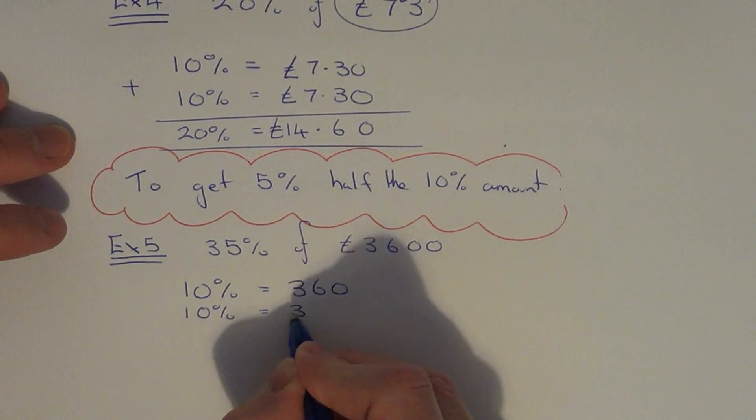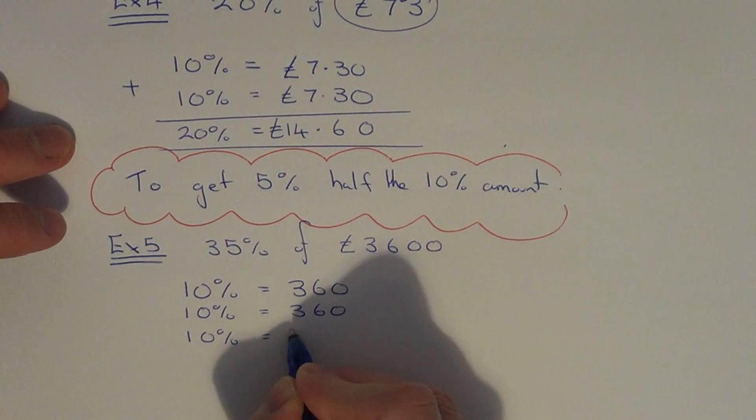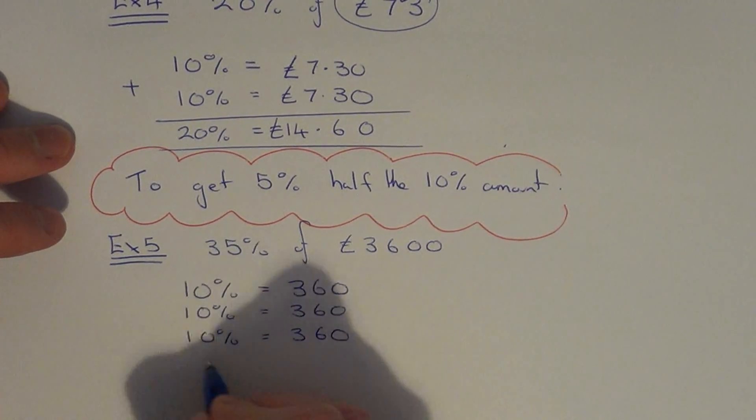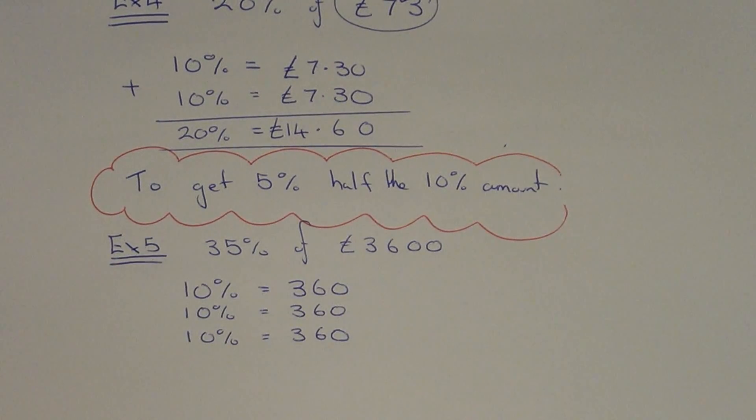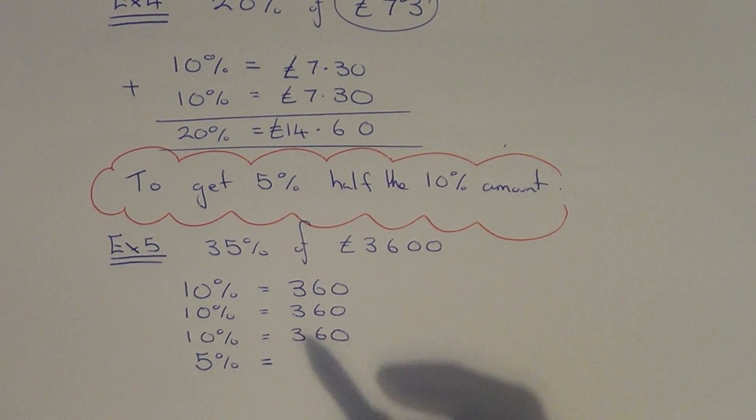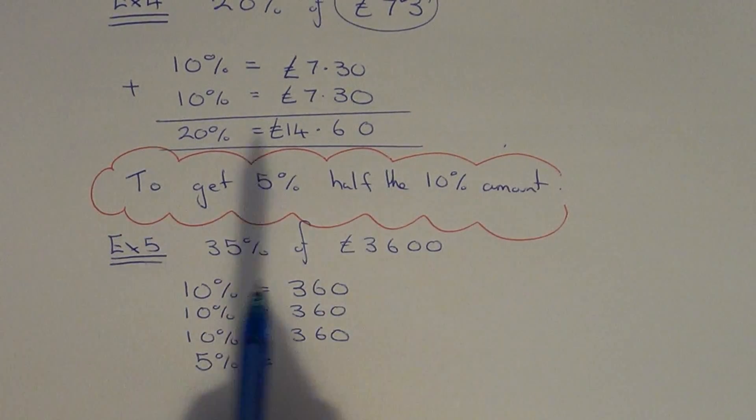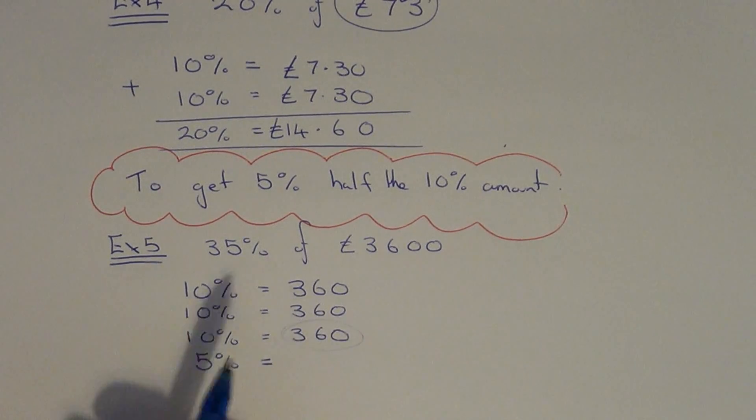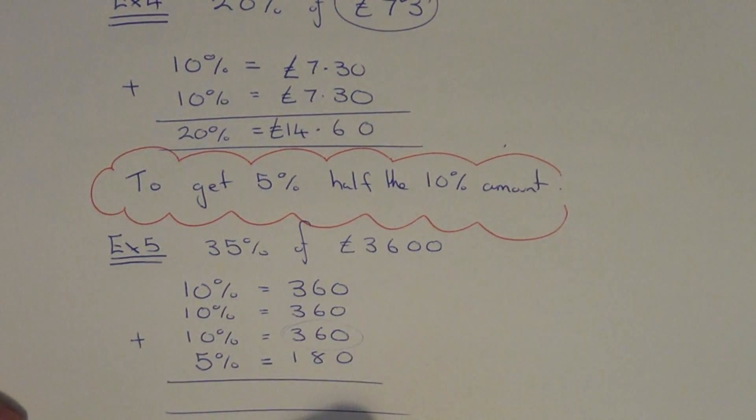So if we do three of these that will give us 30%. And then you should be able to see now that we just need an extra 5% to get to 35%. So we need to add 5% on. So if we read that in the bubble to get 5% you half the 10%. So we just need to half the 10% amount. So half of 360 is 180.